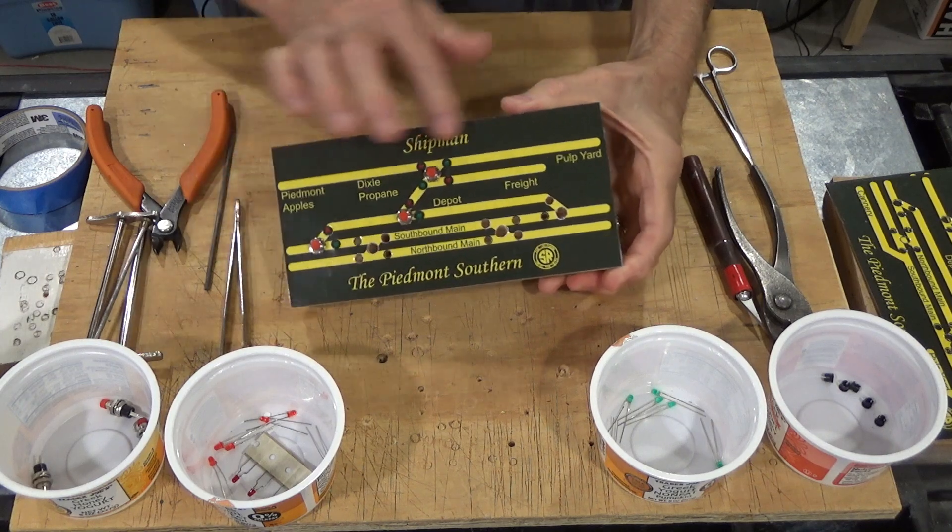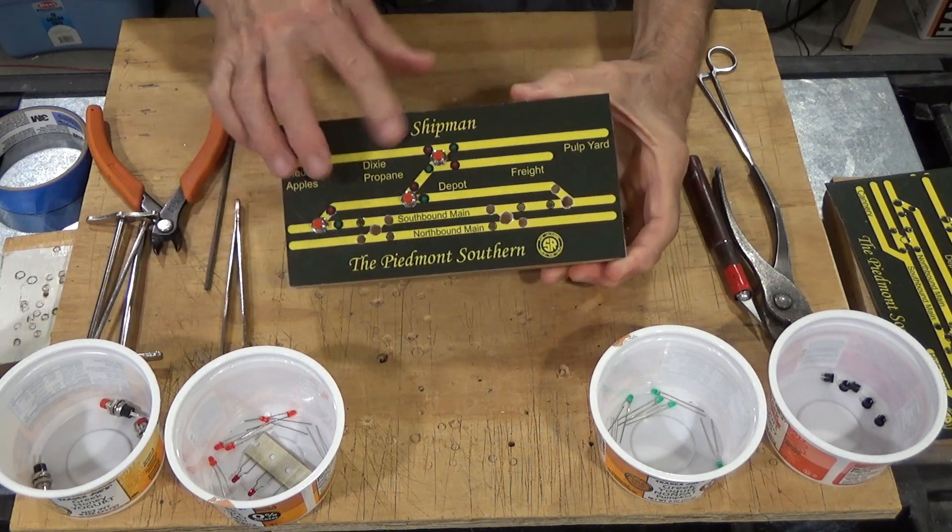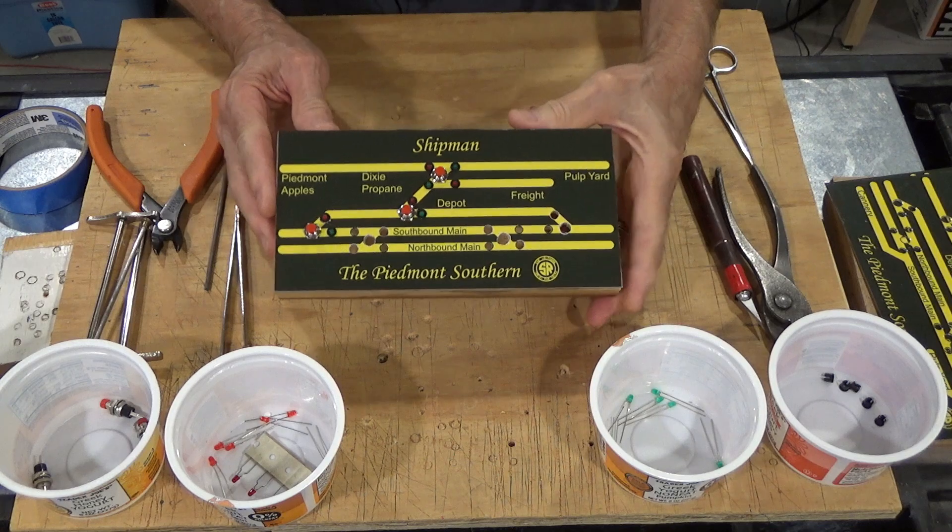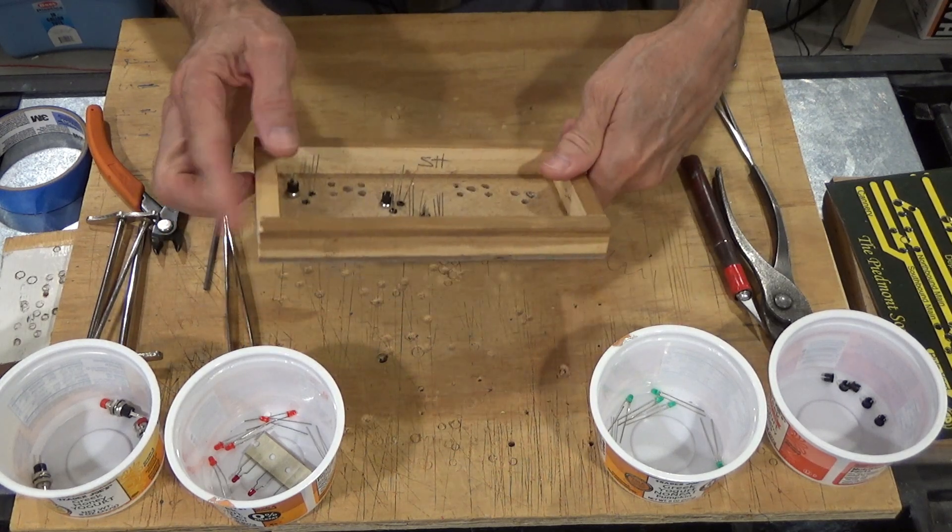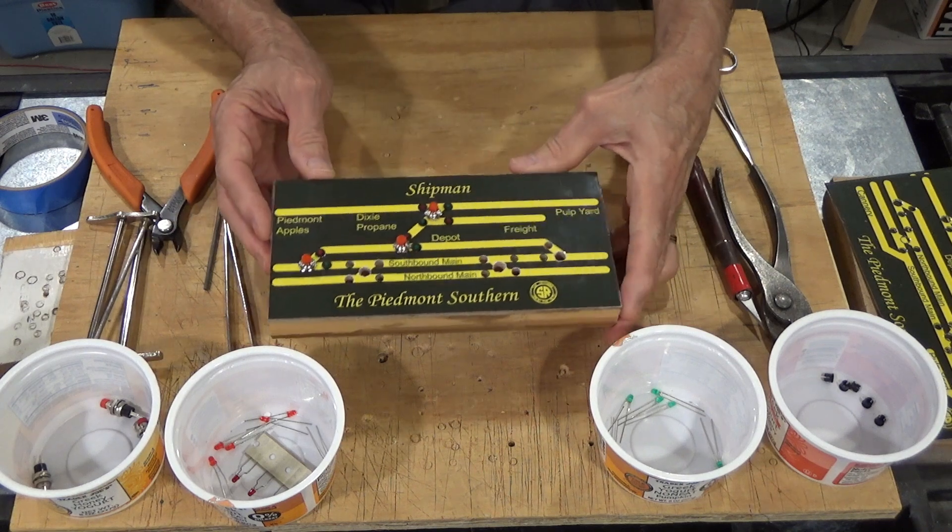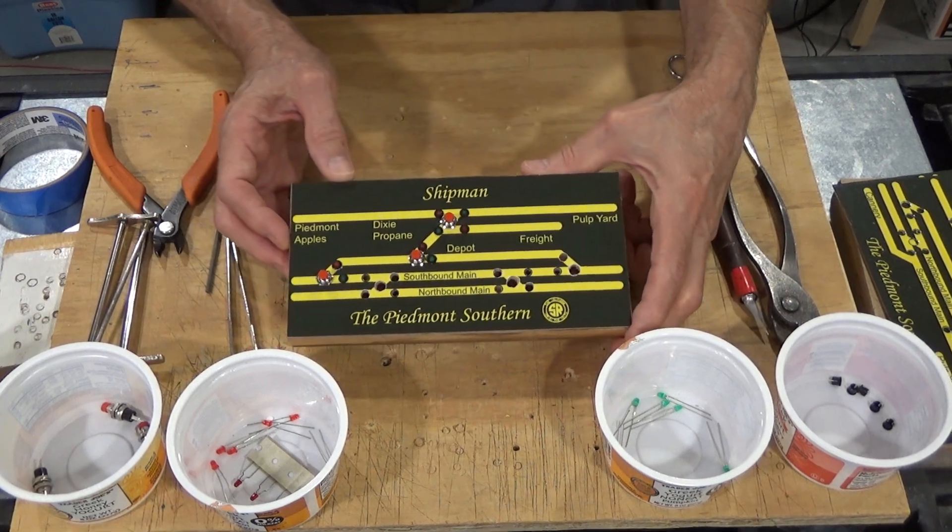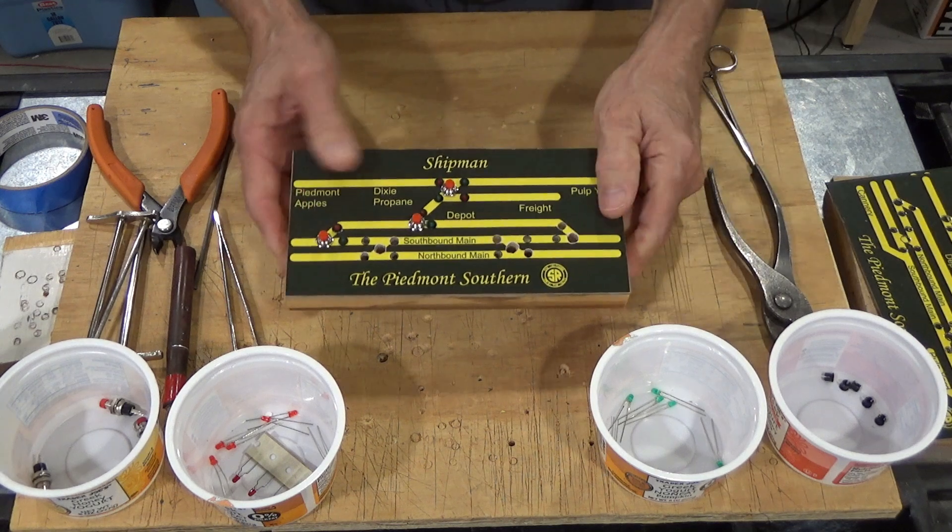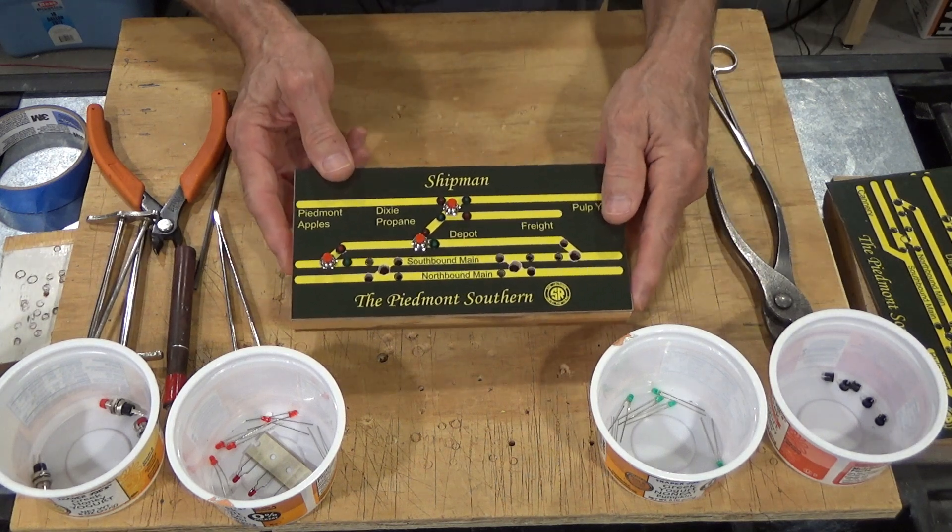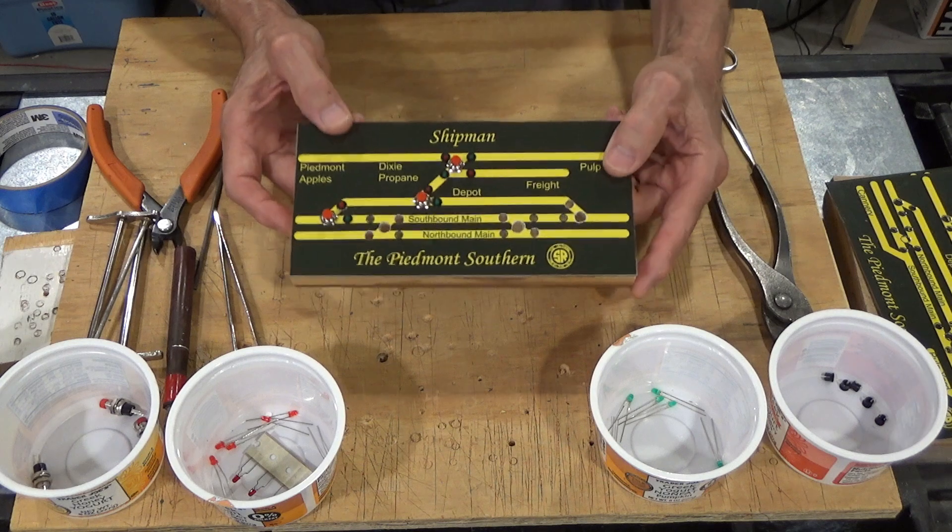As you can see, I've attached the graphic overlay that we created earlier to the box that serves as the base for our control panel. I've got it on here, it's very stable, and I've got it all cleaned up, so let's go ahead and proceed with adding the LEDs and the push buttons.